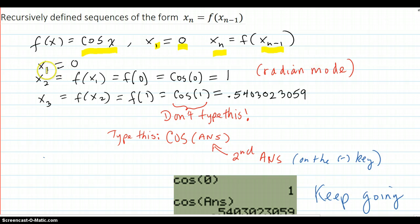In this problem, the first value is given to be 0. The second value is f of the first one, that's x_{n-1}, one previous. So x_1 was 0, which plugs in there. But f is cosine, so cosine of 0 is 1 in radian mode.